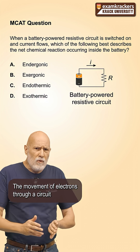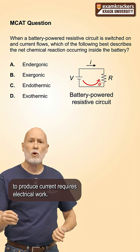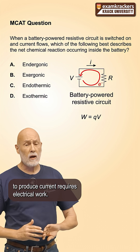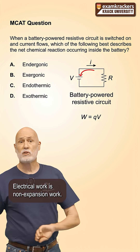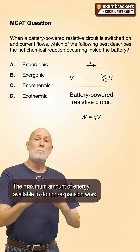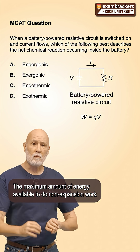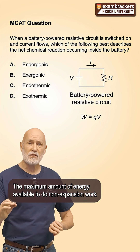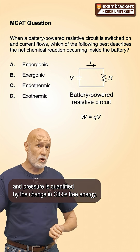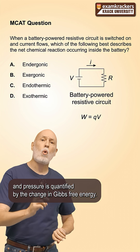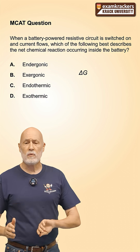The movement of electrons through a circuit to produce current requires electrical work. Electrical work is non-expansion work. The maximum amount of energy available to do non-expansion work at constant temperature and pressure is quantified by the change in Gibbs free energy.